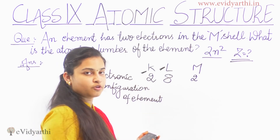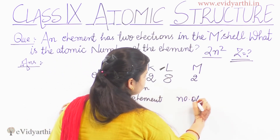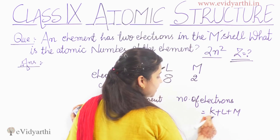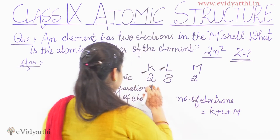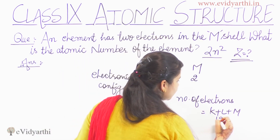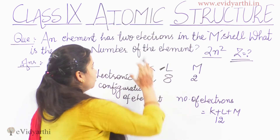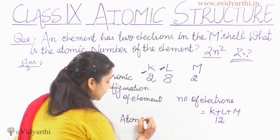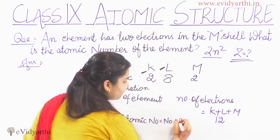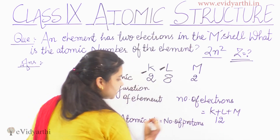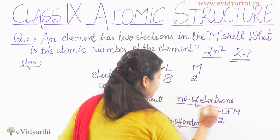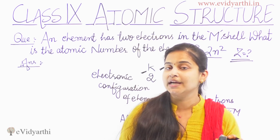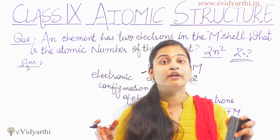Electronic configuration means electron distribution. Now the total number of electrons equals K + L + M = 2 + 8 + 2 = 12. So there are 12 electrons in this particular element. The atomic number is equal to the number of protons, and the number of electrons equals the number of protons because the atom is neutral — positive and negative charges are equal and balanced.